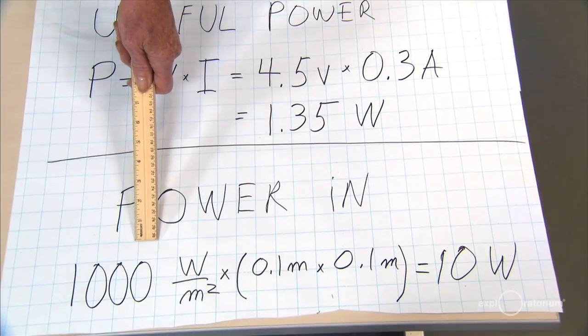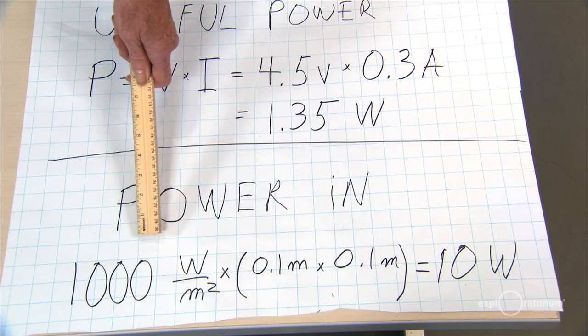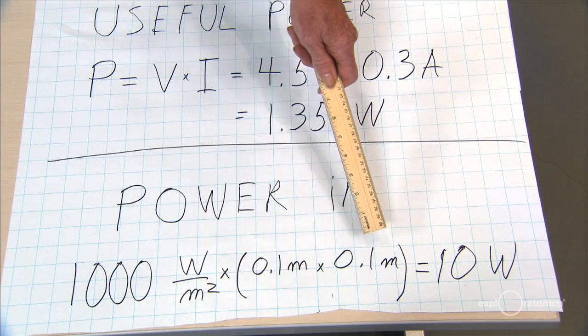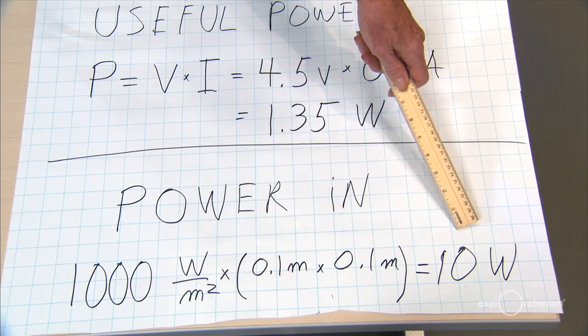Because I take the 1,000 watts per meter squared from the sun, multiply it by 1 tenth of a meter wide and I get 10 watts.